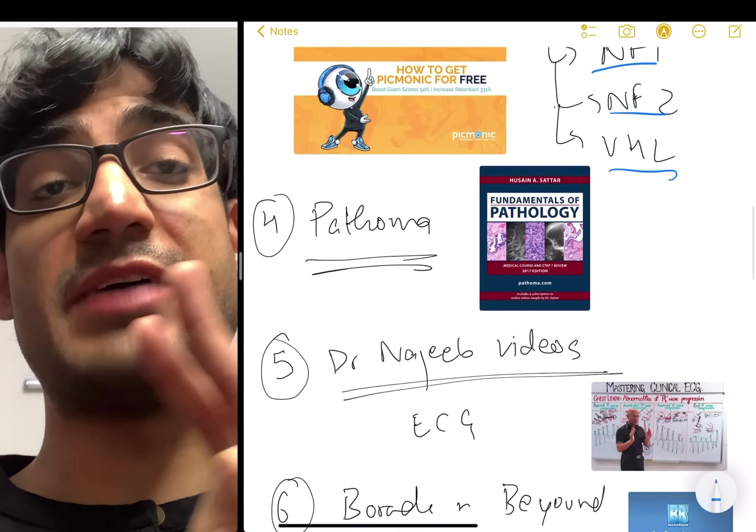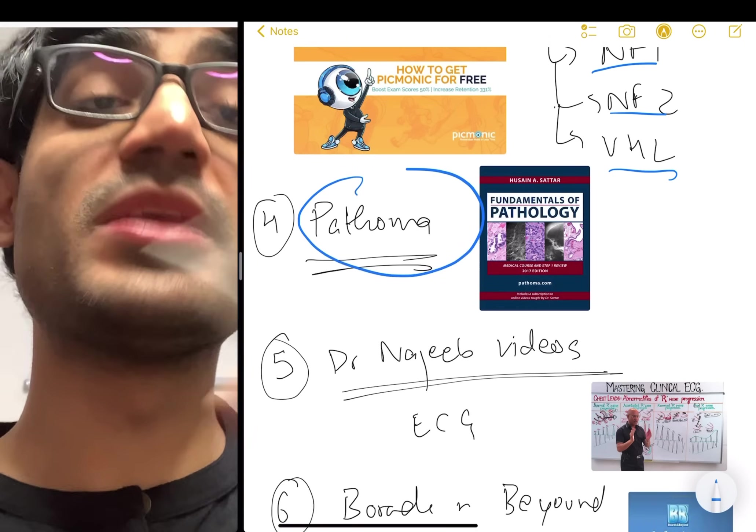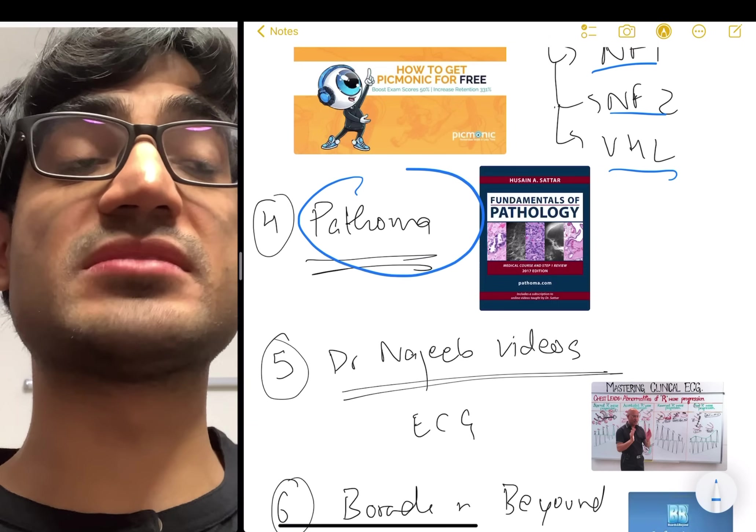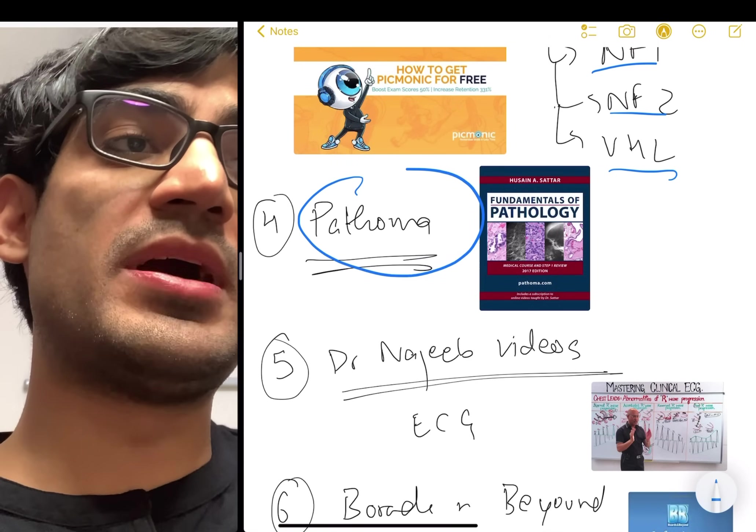The fourth resource I would recommend everybody get in med school for NEET PG and USMLE is Pathoma. Now the reason, and Pathoma is actually a book by Husain A. Sattar, and this is widely used for USMLE.